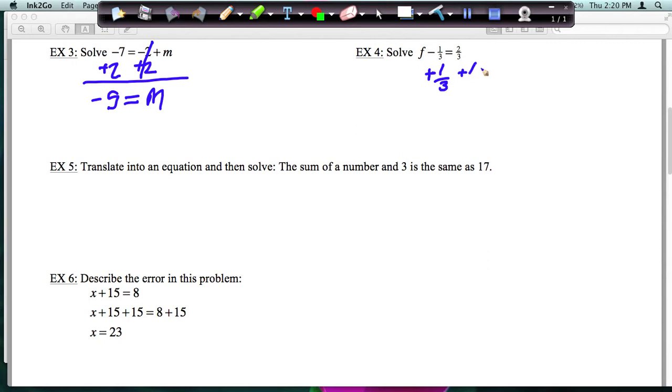And now these have a common denominator, 2 thirds and 1 third. So we can add in our head, or you can use your calculator. Let's start over here. Let's bring down the f. The negative 1 third and positive 1 third cancel. Bring down the equal sign. 2 thirds plus 1 third is 3 over 3, which is just 1.